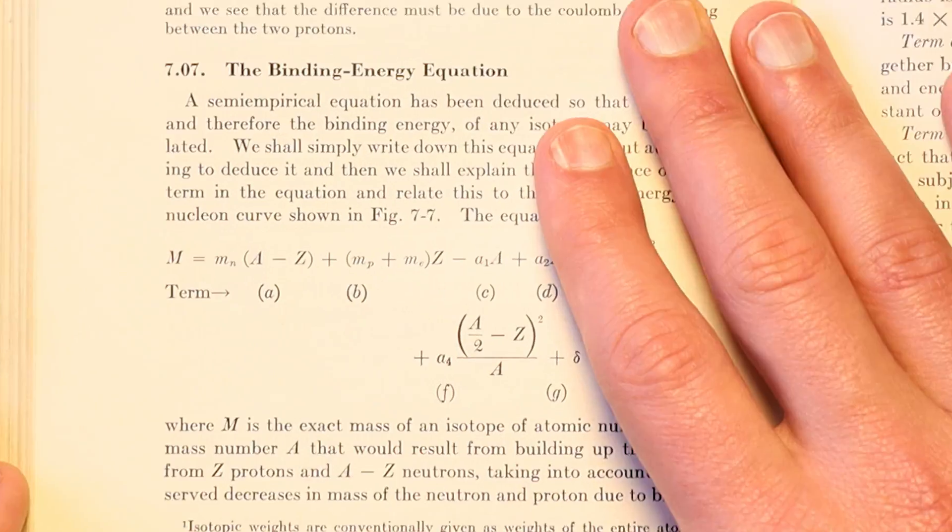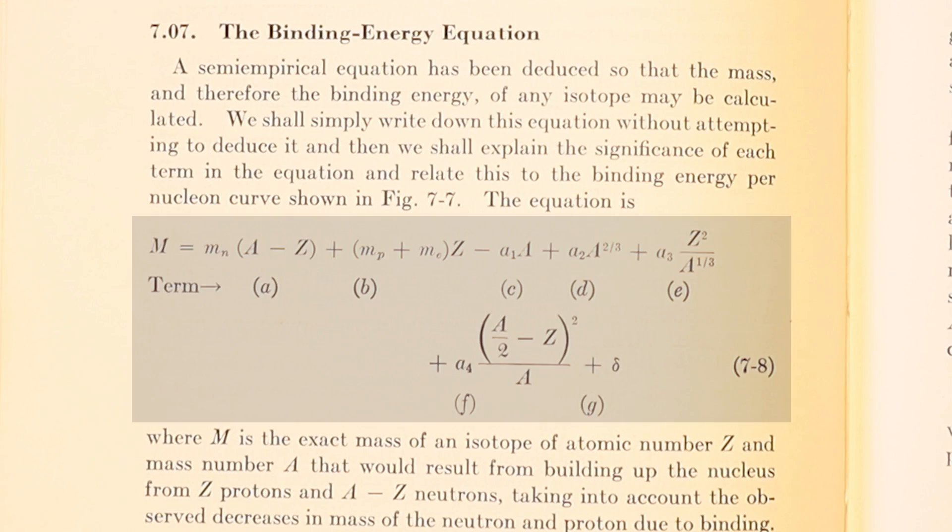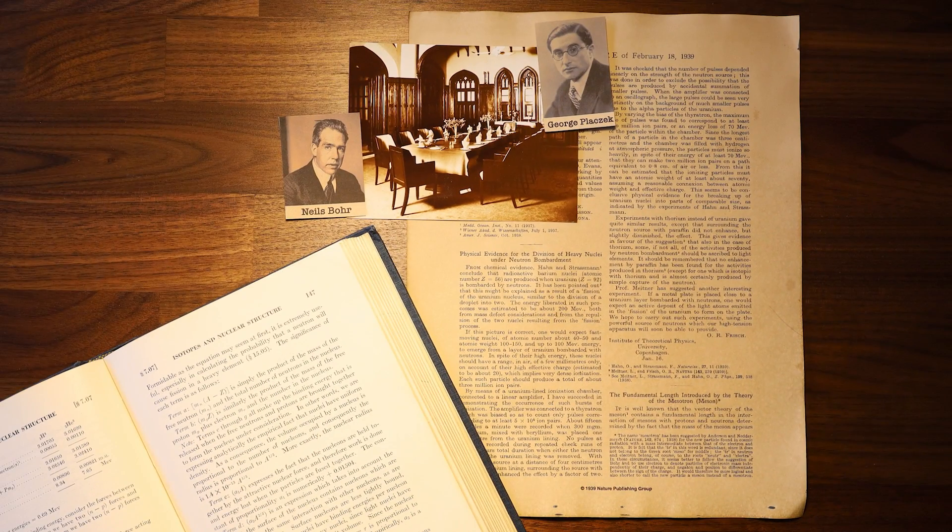Bohr co-developed the liquid drop model of the nucleus, which Frisch had used to show that fission was energetically possible. But according to Plachek, Frisch's latest results left the situation more confused than ever.